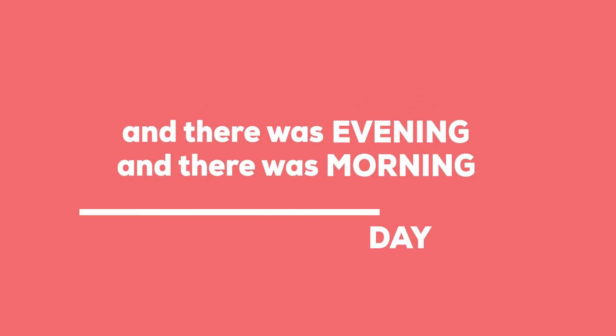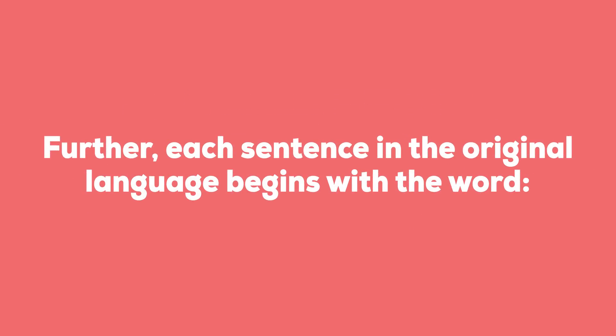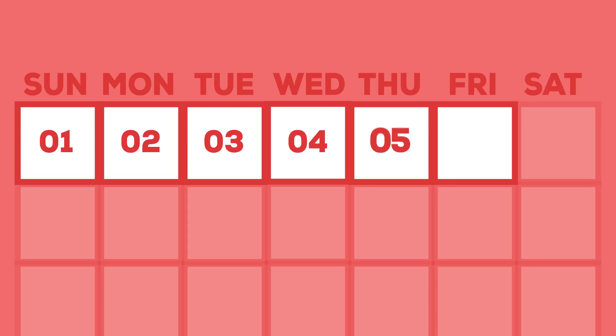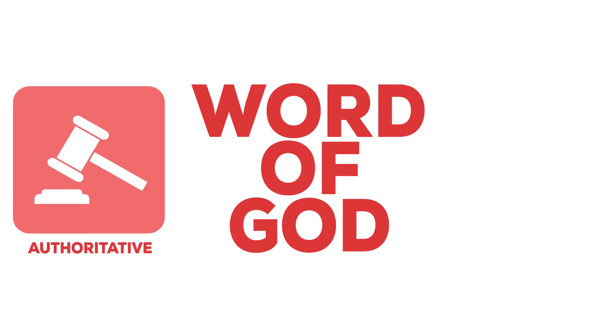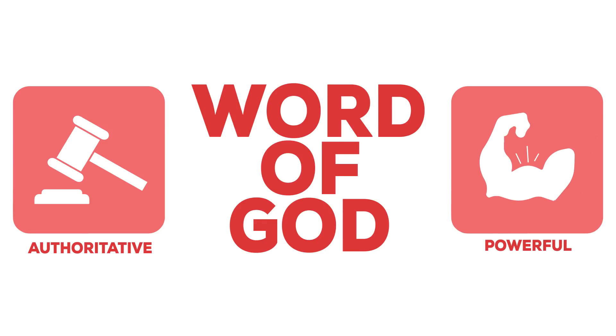And there was evening, there was morning, the first day. Further, each sentence in the original language begins with the word 'and.' This indicates that the days were consecutive and not separated by any period of time. The Genesis account reveals that the word of God is authoritative and powerful. Most of God's creative work is done by speaking. So let's take a look at each day of God's creative work.